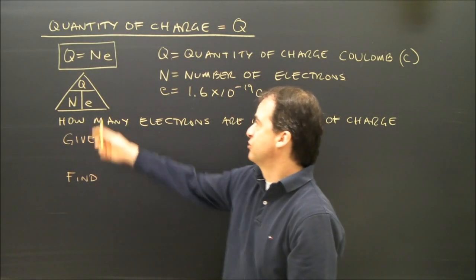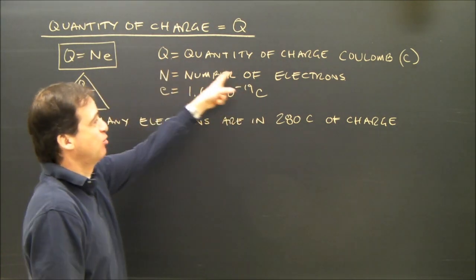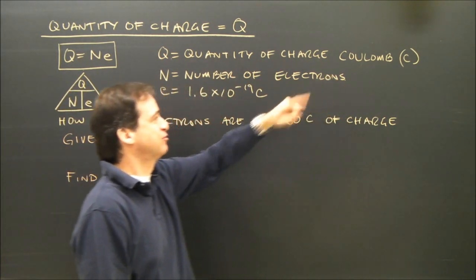Okay, the first formula we're going to look at is Q equals NE. It's called quantity of charge. Q is the quantity of charge in coulombs. The symbol is C for the units.